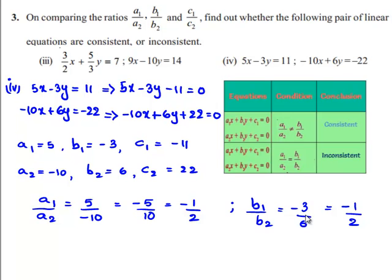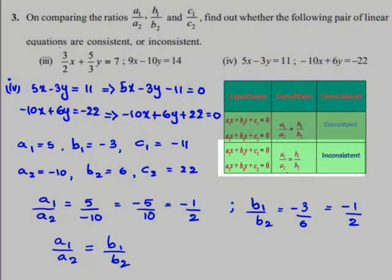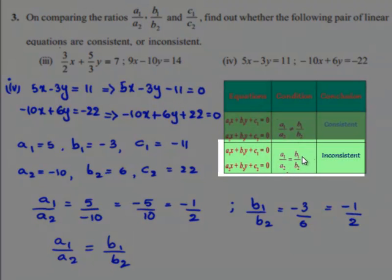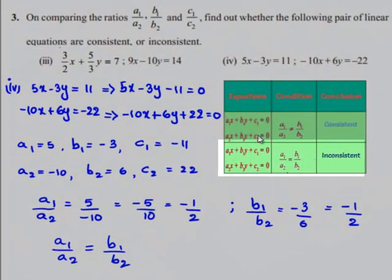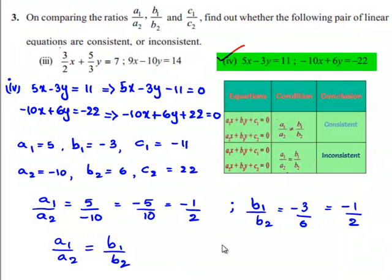Therefore, the values of a1 by a2 and b1 by b2 are equal to minus 1 by 2. That is, a1 by a2 is equal to b1 by b2. By using the second condition, if a1 by a2 is equal to b1 by b2, we can conclude that the given set of linear equations are inconsistent.